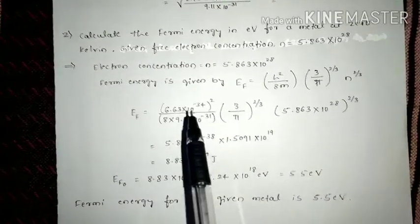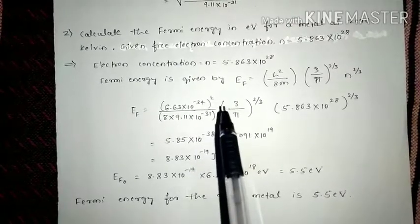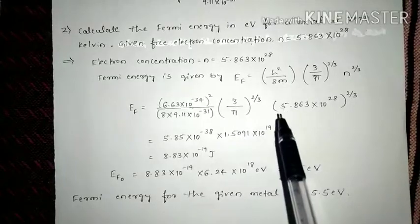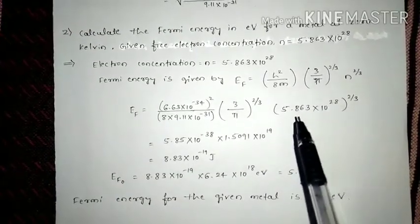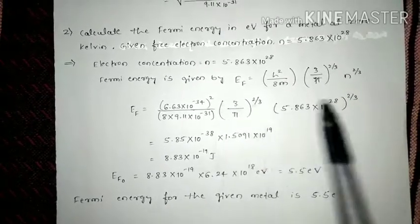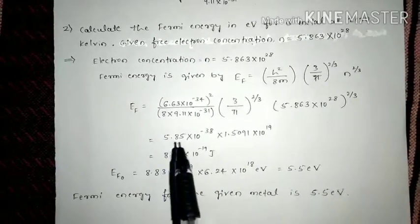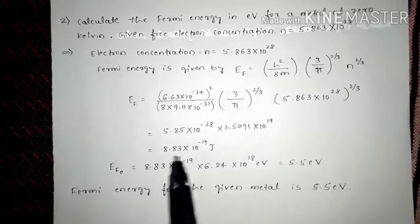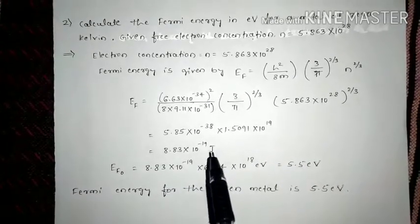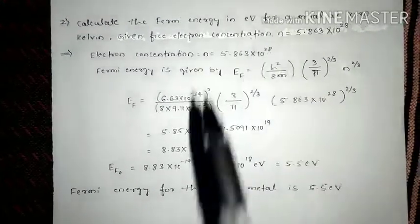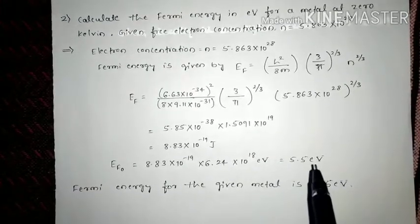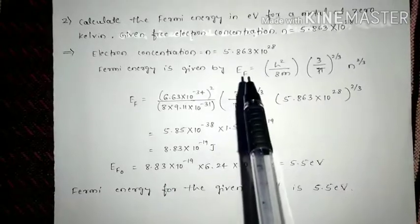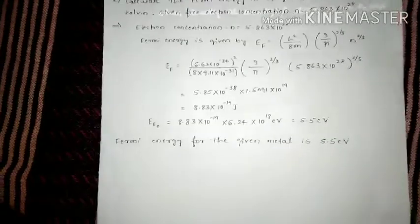We substitute h = 6.63 × 10⁻³⁴ raised to 2. When we simplify, we get 5.863 × 1.5091 × 10⁻¹⁹. Simplifying further gives the result in joules, which we convert to eV as required. The Fermi energy for the given metal is 5.5 eV. This is how we find Fermi energy when electron concentration is given.